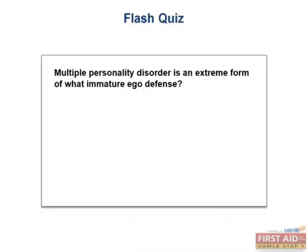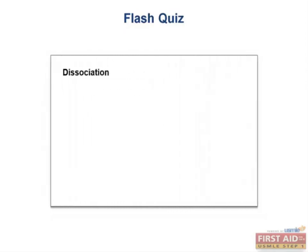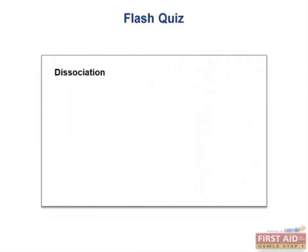Flash quiz: Multiple personality disorder is an extreme form of what immature ego defense? The answer is dissociation. Remember that dissociation refers to temporary, drastic changes in personality, memory, consciousness, or motor behavior to avoid emotional stress, which is what happens in multiple personality disorder but to an extreme level. Look for these ego defenses to be tested in the form of identity disorders on the Step 1 exam, as identity disorders are basically just ego defenses taken to an extreme.